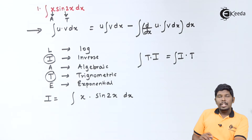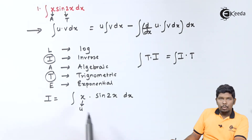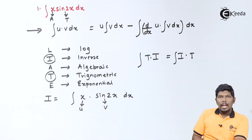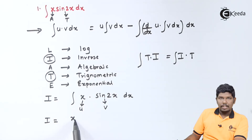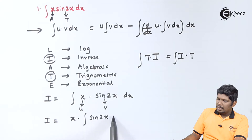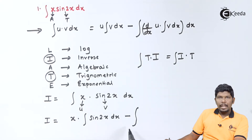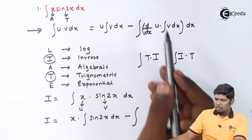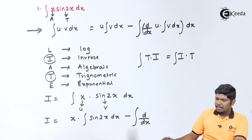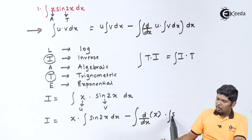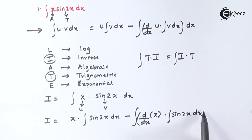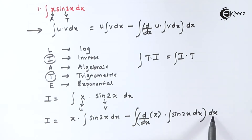After arranging the functions in the form of LIATE, we consider the first part as u and the second part as v. Applying the uv rule gives us: u into integral v dx, minus a bigger integration of d by dx of u — that is d by dx of x — into integral of v dx, which is integral of sin2x dx, all covered by the outer dx.